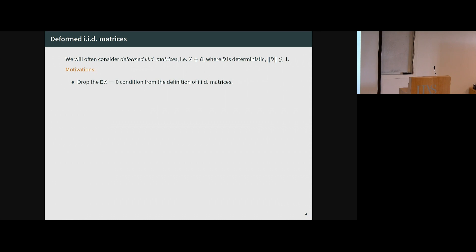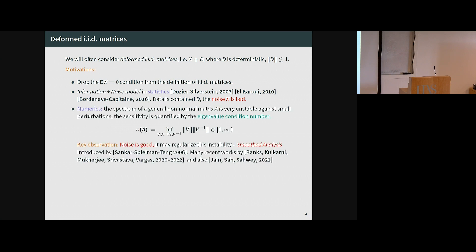There are two much more important motivations to study deformed IID matrices. One is from statistics: the so-called information-plus-noise model. Here D is the presumed data matrix, but in an observation you don't get exactly what you want — you get some noise on top, and the easiest way to model the noise is an IID matrix. The moral message in these statistics applications is that the noise is the bad guy: you would like to understand D, but unfortunately we don't have exactly D — there are errors, included in X.